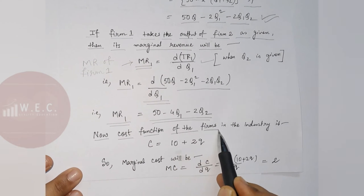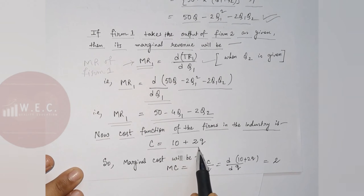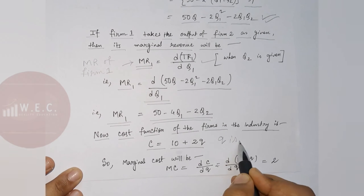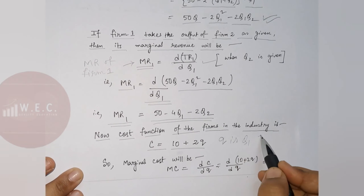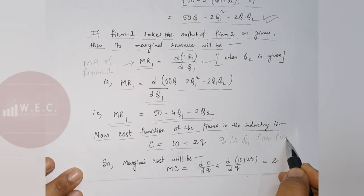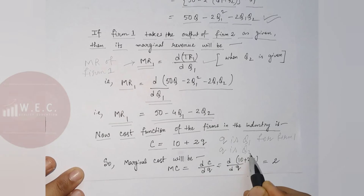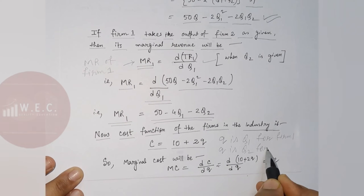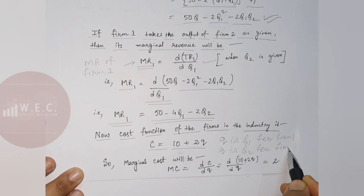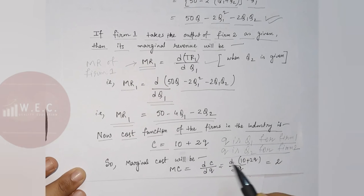The cost function given is C equals 10 plus 2Q, where Q represents Q1 for Firm 1 and Q2 for Firm 2. Both firms face the same cost function.